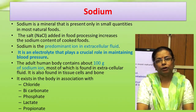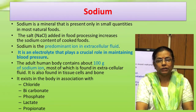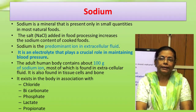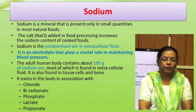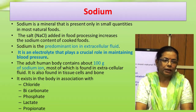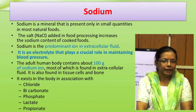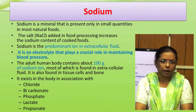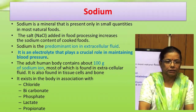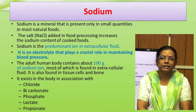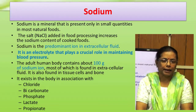Sodium is a mineral present only in small quantities in most natural foods. Salt used as a taste enhancer generally increases the concentration of sodium in cooked food. Sodium is the predominant ion in extracellular fluid and is an electrolyte that plays an important role in maintaining blood pressure. The adult body contains about 100 g of sodium ions, most of which is found in extracellular fluid, and it is also found in muscles, bone, and tissue cells. It exists in the body in association with chloride, bicarbonate, phosphate, lactate, and propionate.